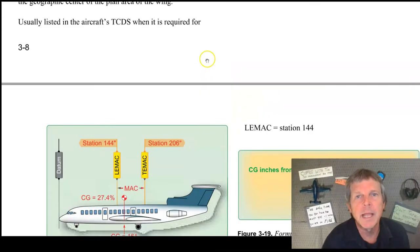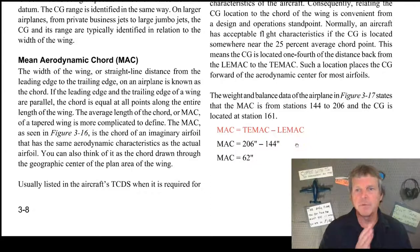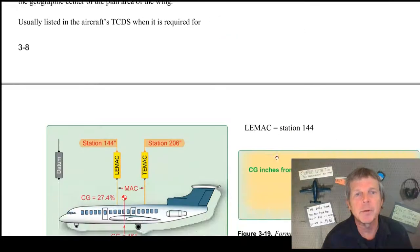So what we're looking at here is formulas. We start out here with this formula where the mean aerodynamic chord is the TMAC minus LEMAC. And they've done this in inches. So this comes from the datum, the numbering line for the airplane. In this example they said the TMAC was at 206 and the leading edge or LEMAC was at 144. 206 minus 144 gives us 62 inches. Okay, now the 62 inches is how long the chord is at the MAC mean aerodynamic chord line.